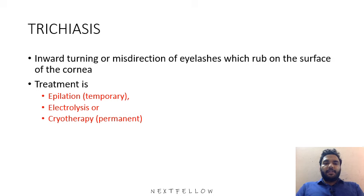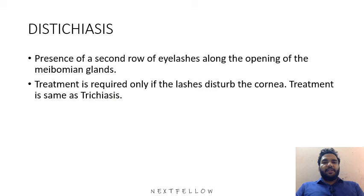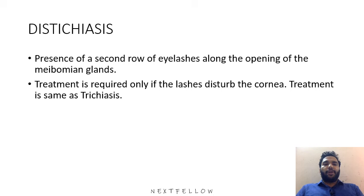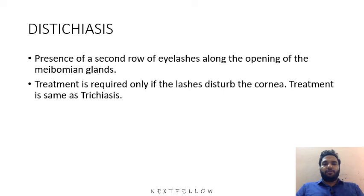Other lid conditions include trichiasis — the inward turning or misdirection of eyelashes which rub on the surface of the cornea. Treatment includes epilation, electrolysis, and cryotherapy. Distichiasis is the presence of a second row of eyelashes along the opening of the meibomian gland. Treatment is required only if the lashes disturb the cornea, and is the same as for trichiasis.